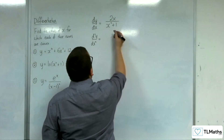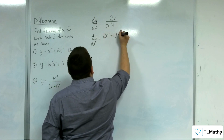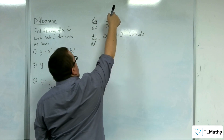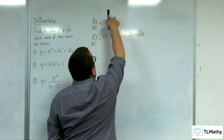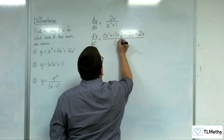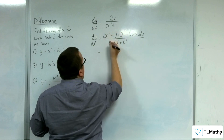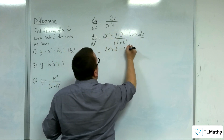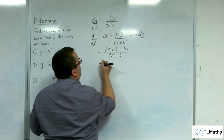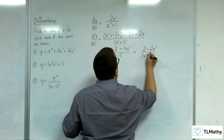The quotient rule: the bottom times the derivative of the top, take away the top times the derivative of the bottom. So that's (x² + 1) times 2, take away 2x times 2x, all over (x² + 1) squared. Simplifying: 2x² + 2 minus 4x², all over (x² + 1)², giving us (2 − 2x²) over (x² + 1)².